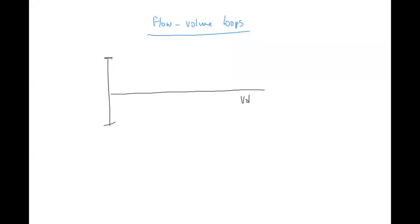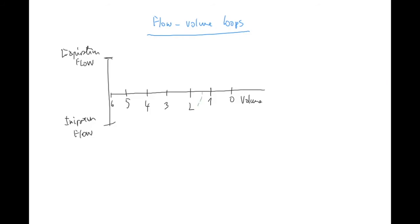On the flow-volume loop, volume is on the x-axis and flow - the speed of the air - is on the y-axis, with inspiration flow above and expiration flow below. For a normal healthy curve: you start somewhere around one liter residual volume, you inhale and speed up to a maximum inspiratory flow, then you exhale - going very fast at the beginning and then decreasing. This is the normal flow-volume loop.